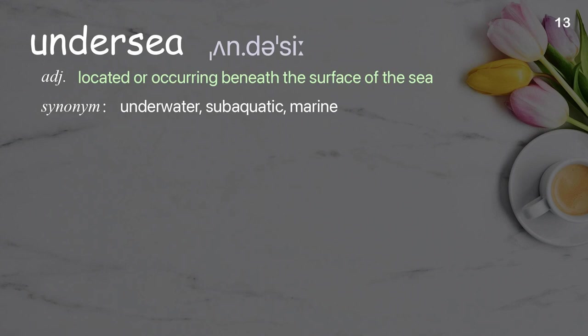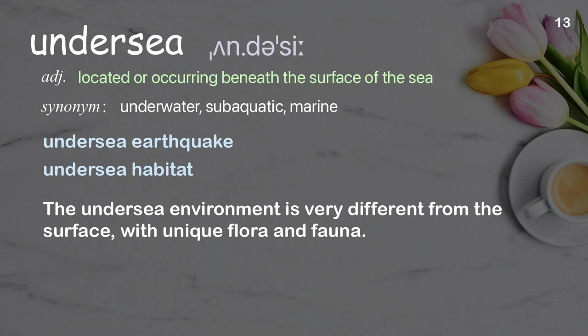Undersea: located or occurring beneath the surface of the sea. Examples: undersea earthquake, undersea habitat. The undersea environment is very different from the surface, with unique flora and fauna.